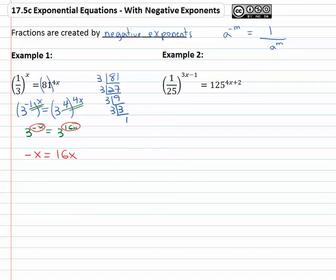The negative x must be equal to the sixteen x, and we now have a very simple equation. We can solve getting the variable on one side by adding x to both, the left side equals zero, and sixteen plus x is seventeen x. Dividing both sides by seventeen, we have x equals zero.